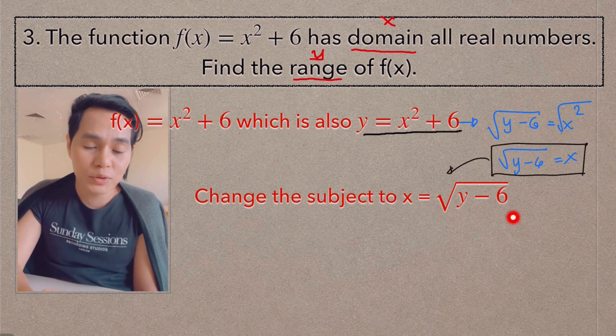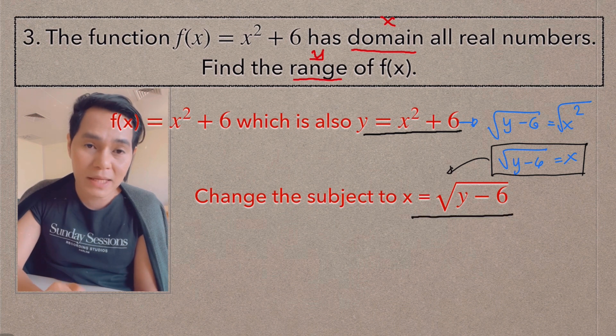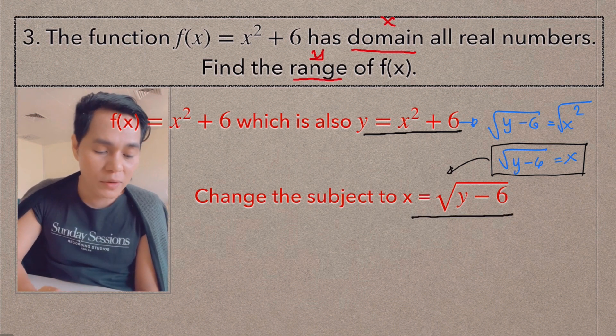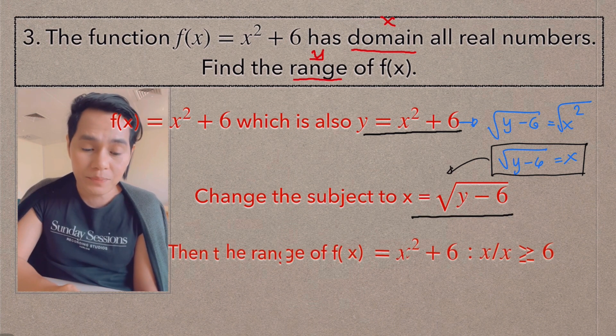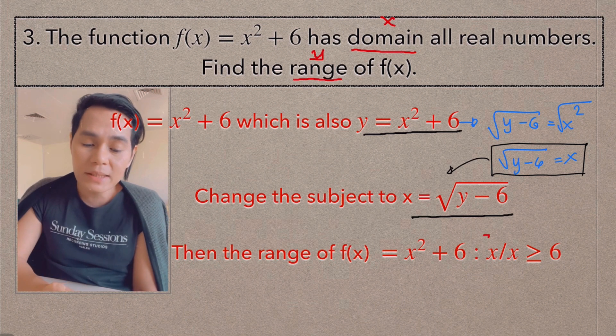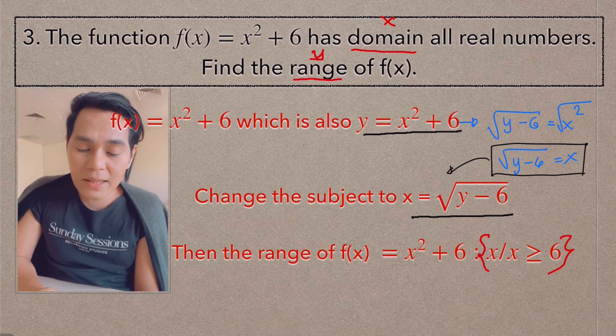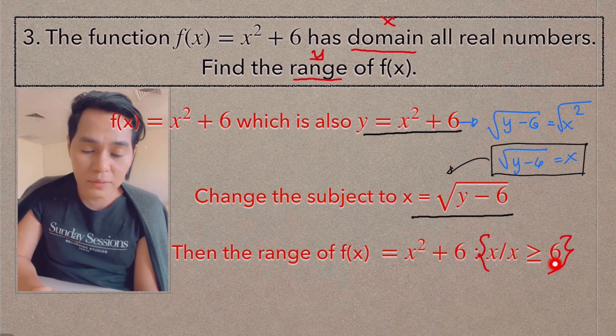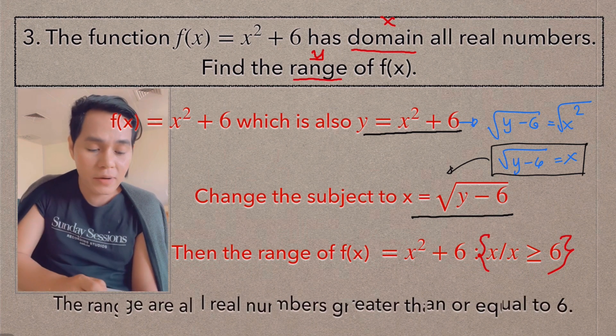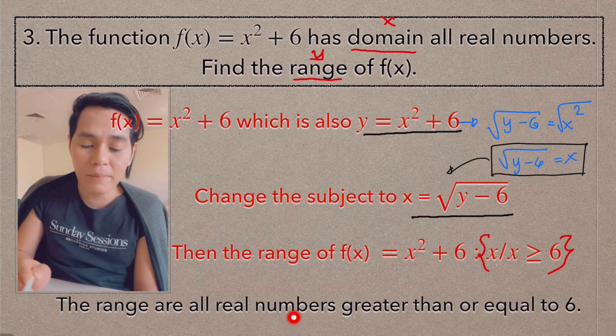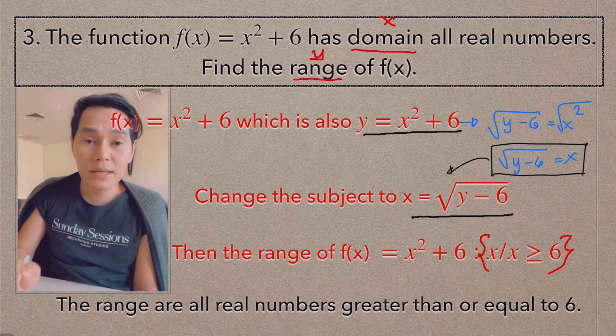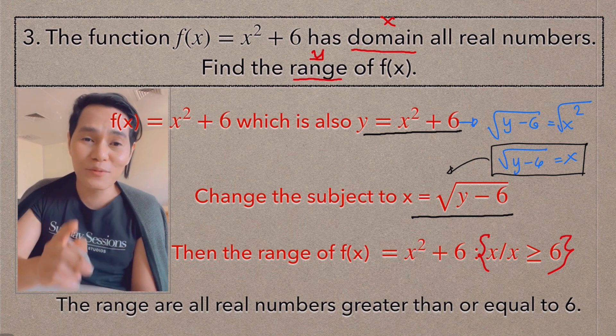So that's how you do it. And this is now in radical form. And remember how to find out the range in terms of this. We can do some restrictions now. And then you would say that the range of f(x) = x² + 6, or in x, such that x is greater than or equal to 6. Or you would say the range of f(x) are all real numbers greater than or equal to 6. So that's how you do that.